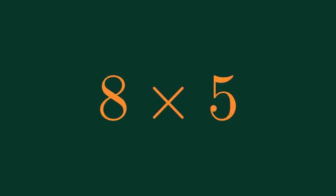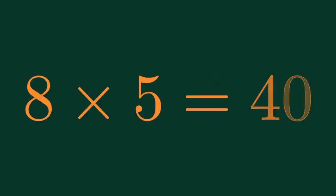What is 8 times 5? 8 times 5 is equal to 40.